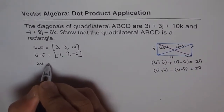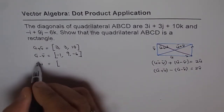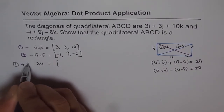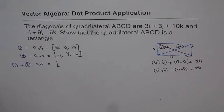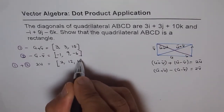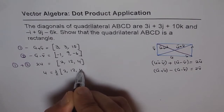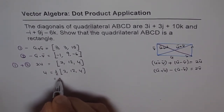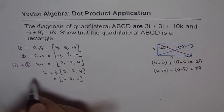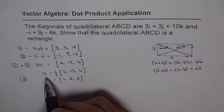Adding the two equations gives us 2u. So 3 + (-1) = 2, 3 + 9 = 12, and 10 + (-6) = 4. Therefore 2u = (2, 12, 4), and u = (1, 6, 2).